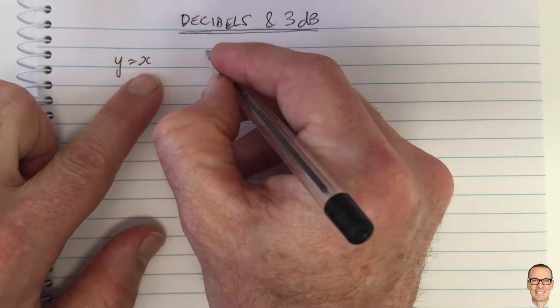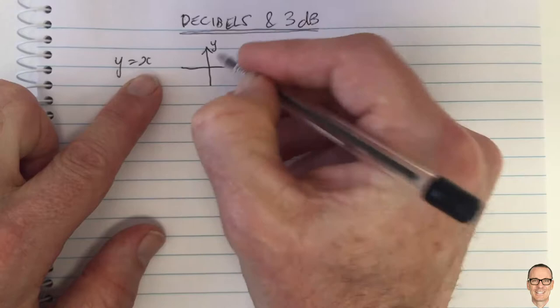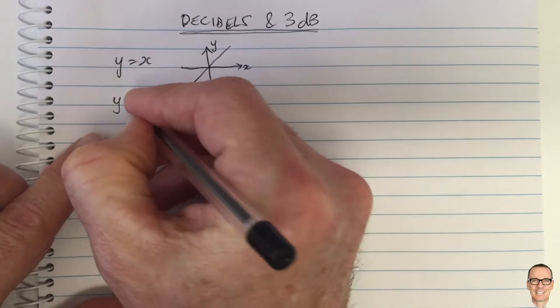You could plot this on an XY curve and of course you get a straight line at 45 degrees.